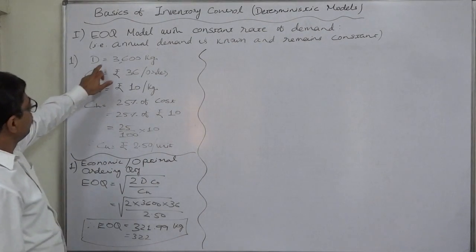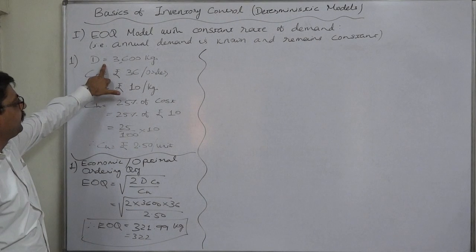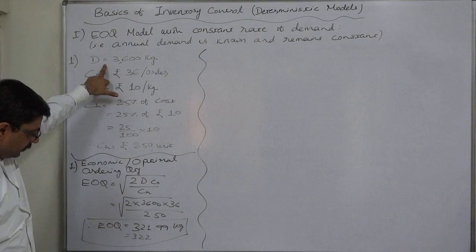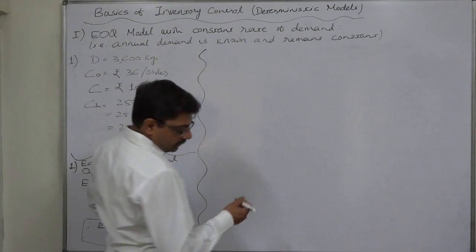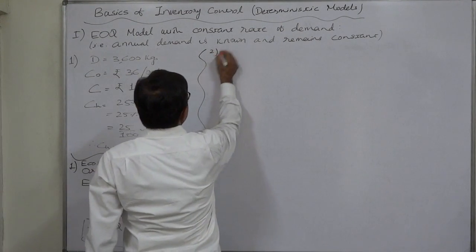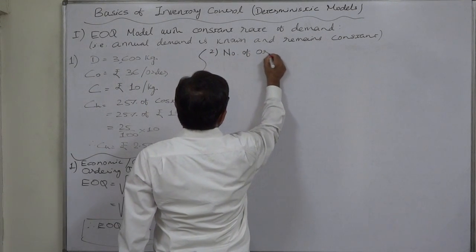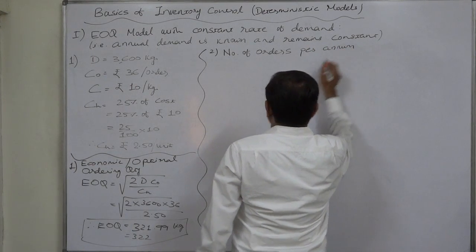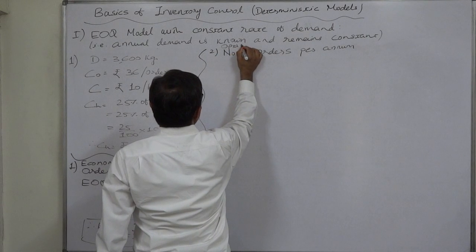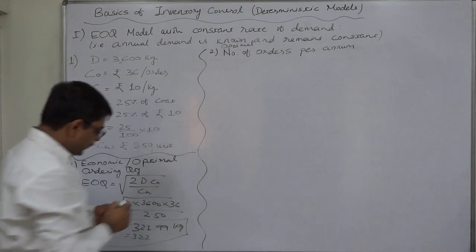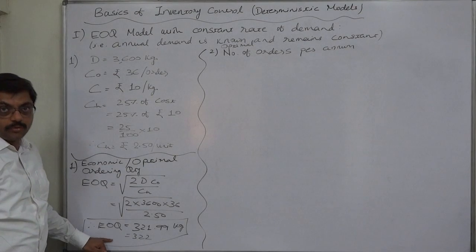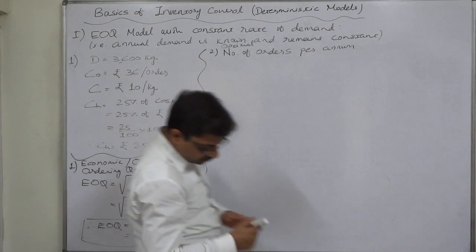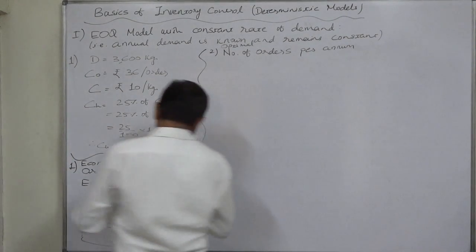Now, the annual demand or requirement of this particular type of inventory is 3600 kg per annum. So, the second calculation we will make is number of orders per annum or per year. That will be optimal number of orders. Why optimal? Because we believe that we are going to follow the EOQ. That means, every time we will place an order for 322 kg or say precisely 321.99 kg.